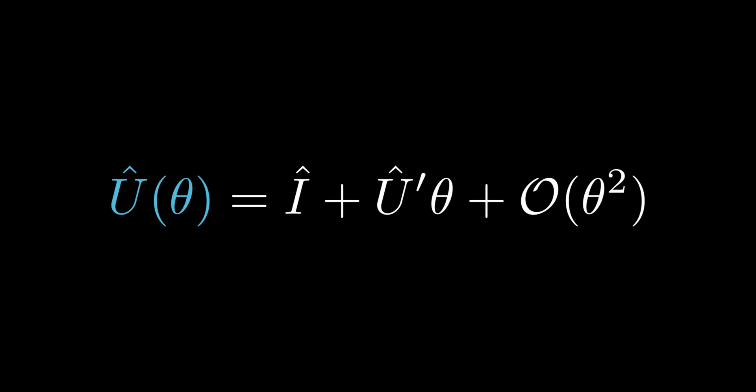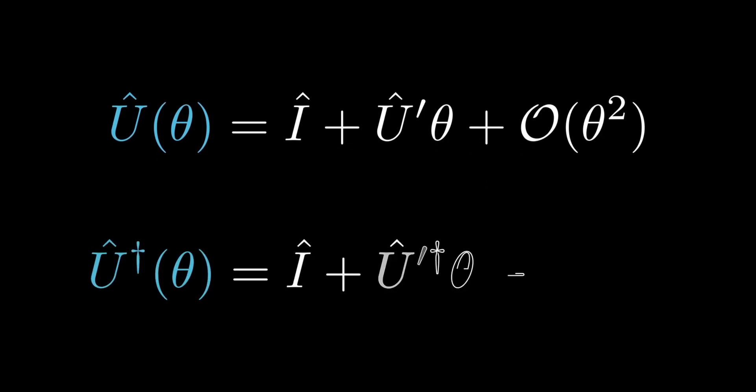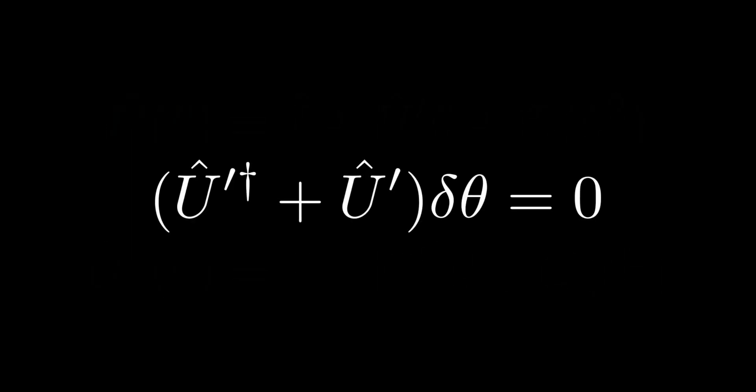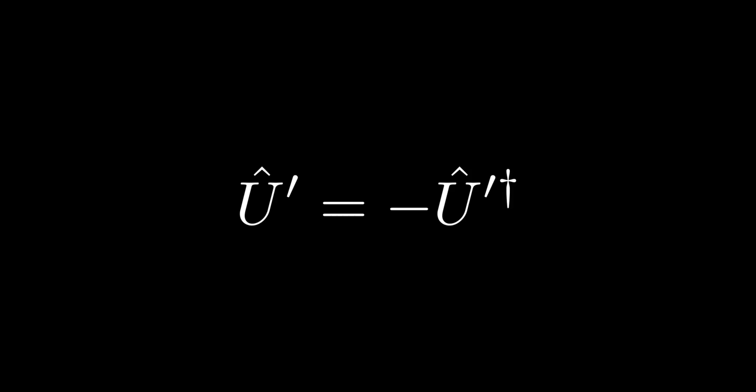Substituting into the previous equation yields U of theta equals I plus U-prime theta plus O of theta-squared. Taking the Hermitian adjoint of both sides, and noting that the identity operator is Hermitian and the parameter is real, yields the following equation. We now multiply the expansions of the unitary operator and its Hermitian adjoint, equating the result to the identity since U is unitary. Making theta sufficiently small to delta-theta so that second and higher order terms are negligible, then comparing terms first order in delta-theta yields U-prime-dagger plus U-prime times delta-theta equals 0.